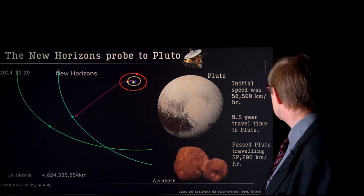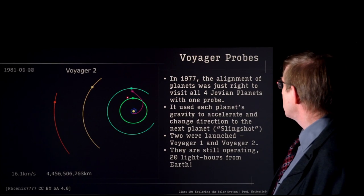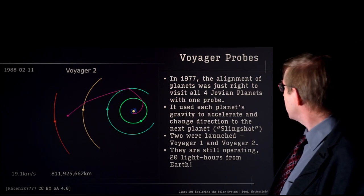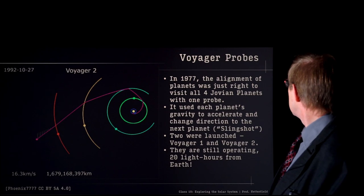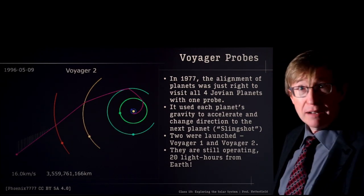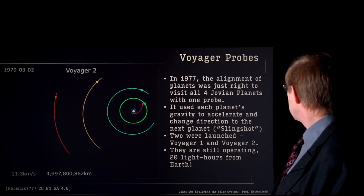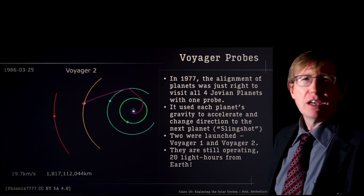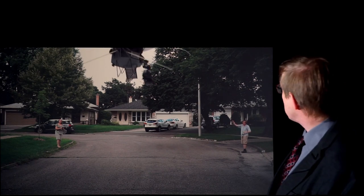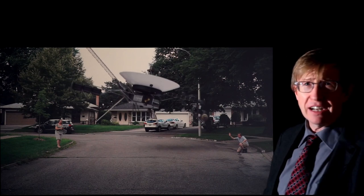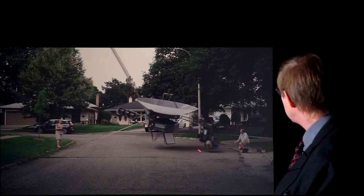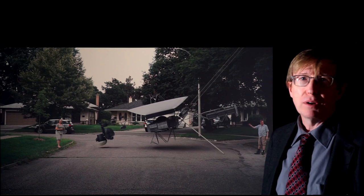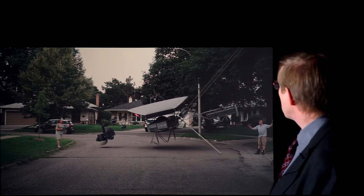The most famous of all these flyby missions is the Voyager probe, which launched from Earth, visited Jupiter, Saturn, Uranus, and Neptune — an absolutely fantastic mission seeing all four of those planets. They used each planet's gravity to accelerate and change directions. There were two — Voyager 1 and Voyager 2 — and they're still operating. They're 20 light hours away from the Earth, incredible machines. The telescope and instruments — magnetometers, radiation sensors — many are still operating now. It was launched in the 70s and it's still going. This is the communications dish for looking back at the Earth.